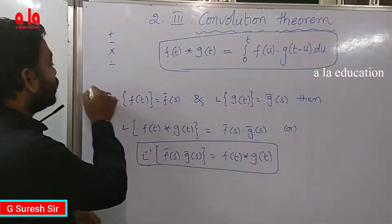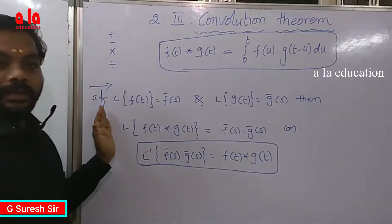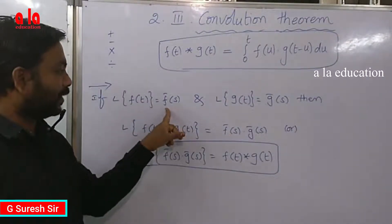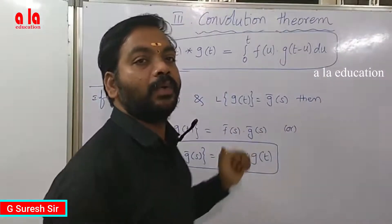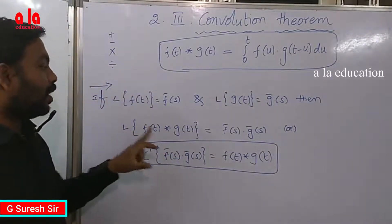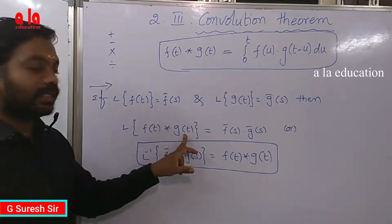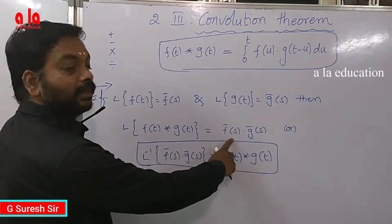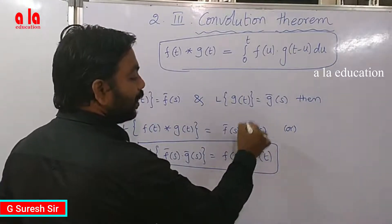Now come to the convolution theorem. Two functions in terms: if the Laplace transform of f(t) is equal to F̄(s), and the Laplace transform of g(t) is equal to Ḡ(s), then the Laplace transform of the convolution product of f(t) and g(t) is equal to F̄(s) multiplied by Ḡ(s). It is directly multiplication.